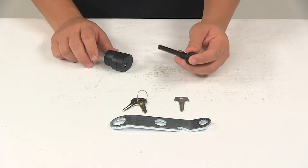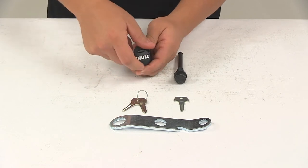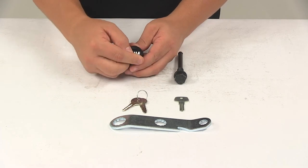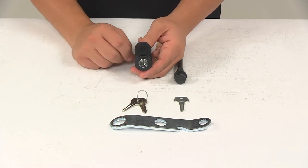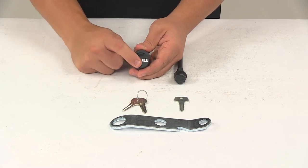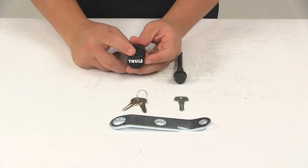The unit features an integrated dust cover. This keeps the lock clean by preventing dirt, grime, and moisture from entering the lock core. It flips up to expose the shutter, then folds down and snaps into place to keep the elements out.